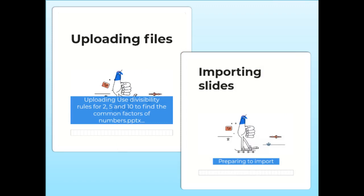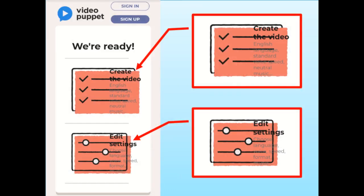Make sure that you have an internet connection and just wait until the file has been completely imported. When the file is completely imported, you will be asked whether you will create the video immediately with its default format, such as language, speed of narration, and many others.